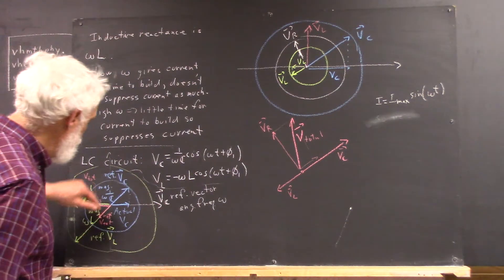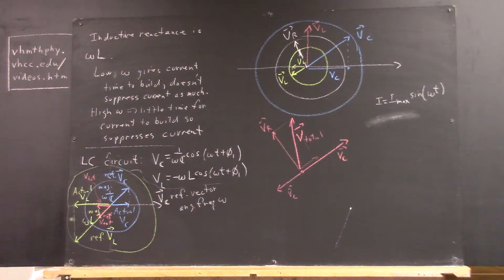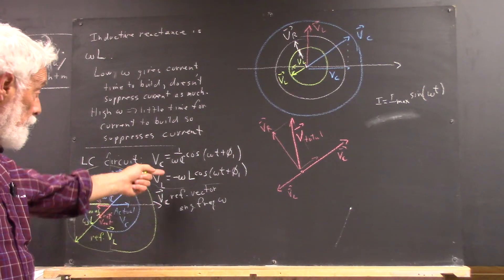V total. I could use a bigger picture of this, but I've got a bigger picture out here. Okay, that's basically your phasor picture for an LC.